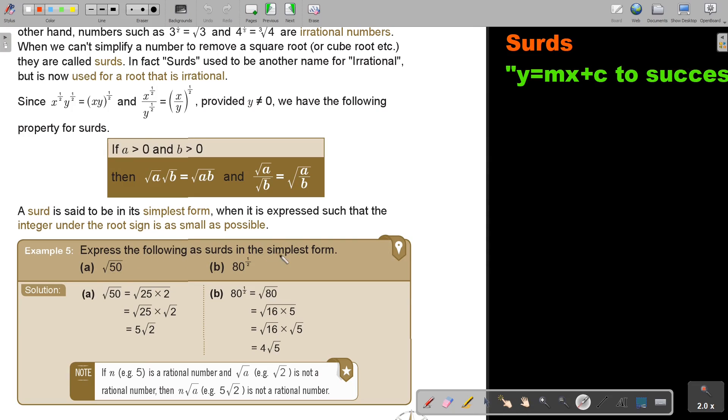Let's look at this kind of example. Express the following as surds in the simplest form. Now, you can either, and I'm going to show you another method also. You can think what times what is 50, and then you think of a square number.